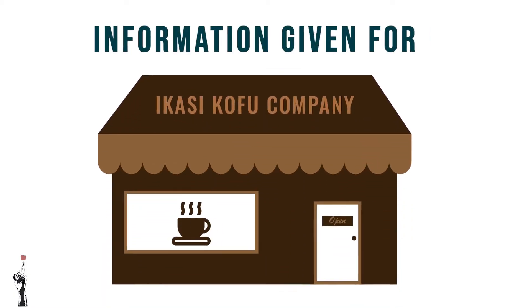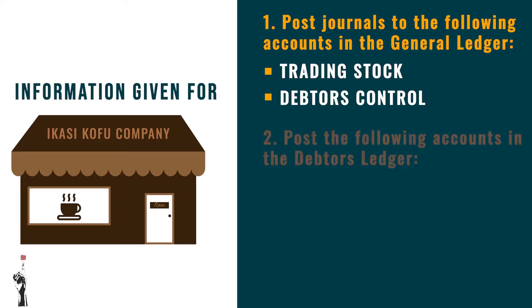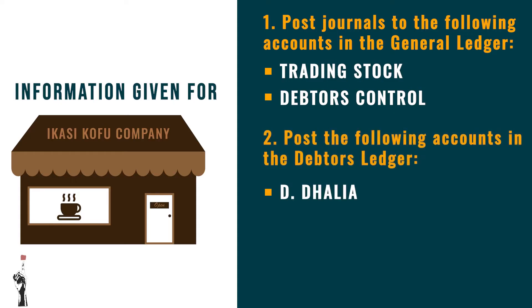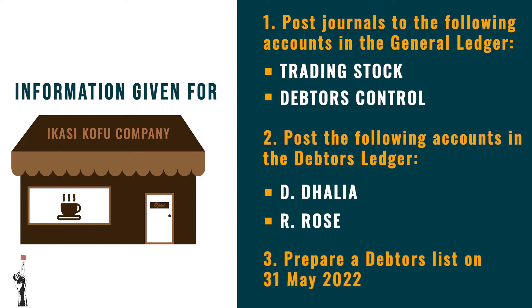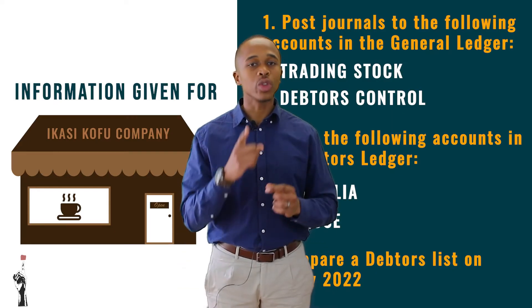For this lesson we'll be looking at the information given for Ikasi Kofu Company. You will then post these journals to the following accounts in the general ledger, focusing on the trading stock and debtors control. You will also post the accounts of D Dahlia and R Rose in the debtors ledger, and finally you will prepare a debtors list on the 31st of May 2022.